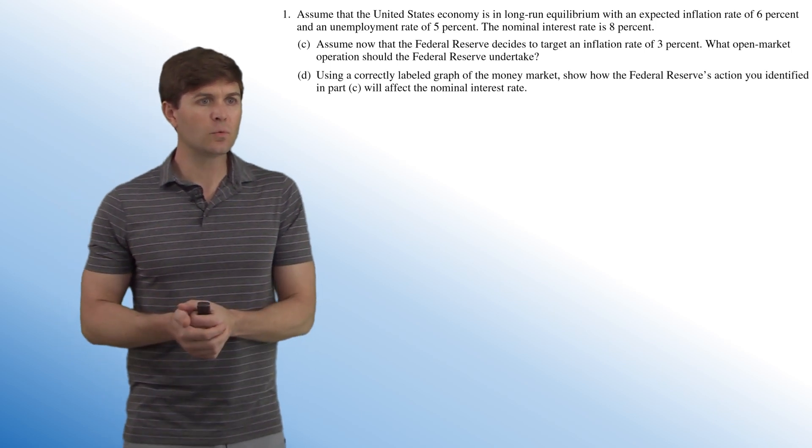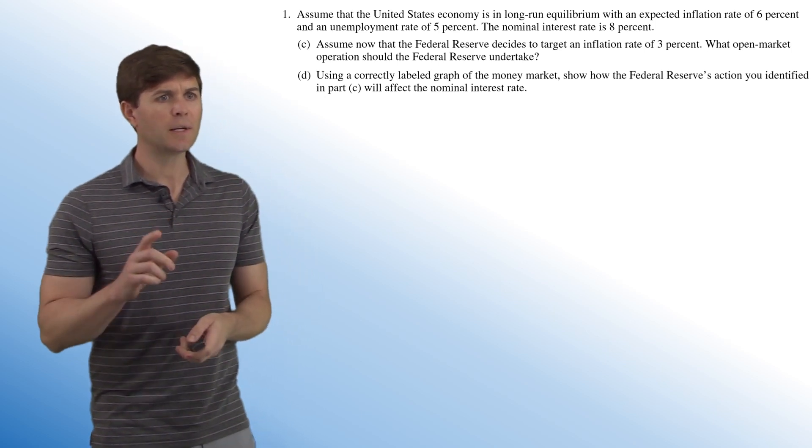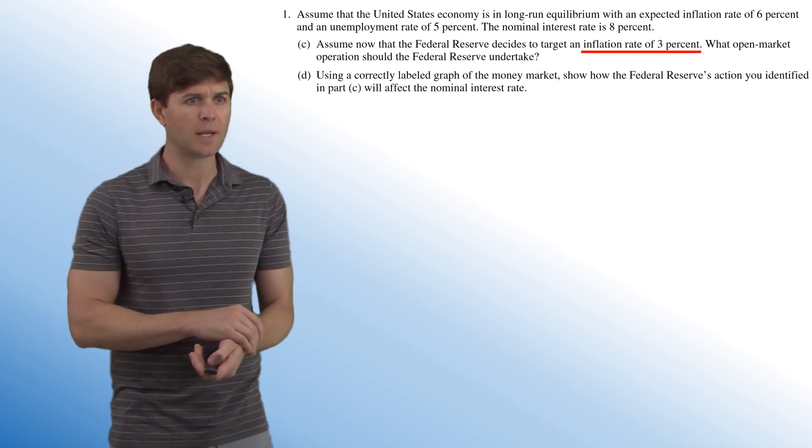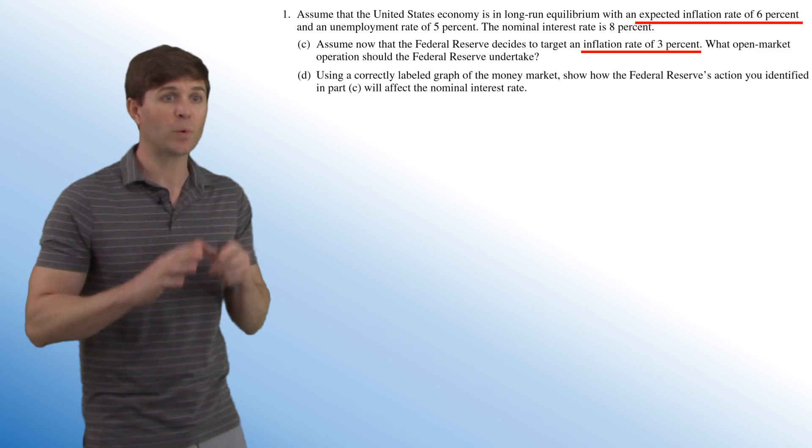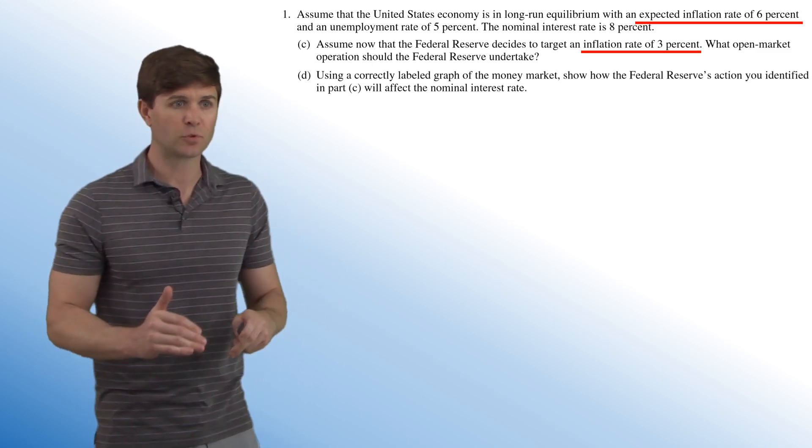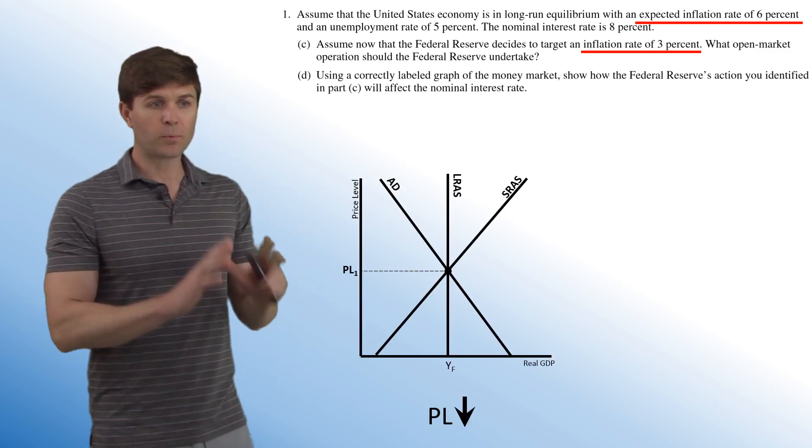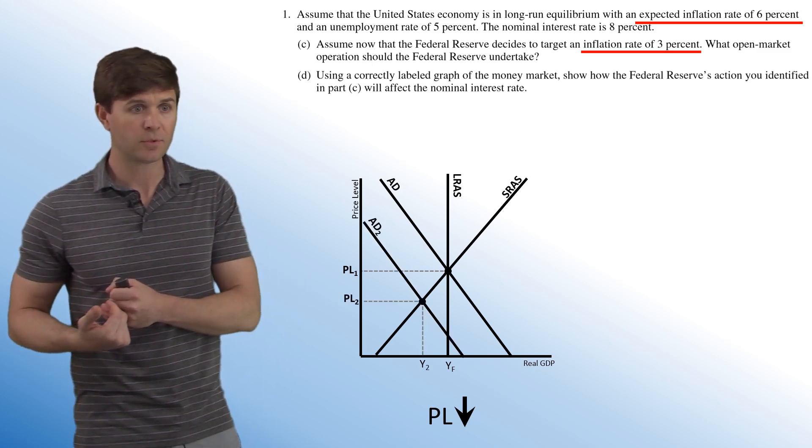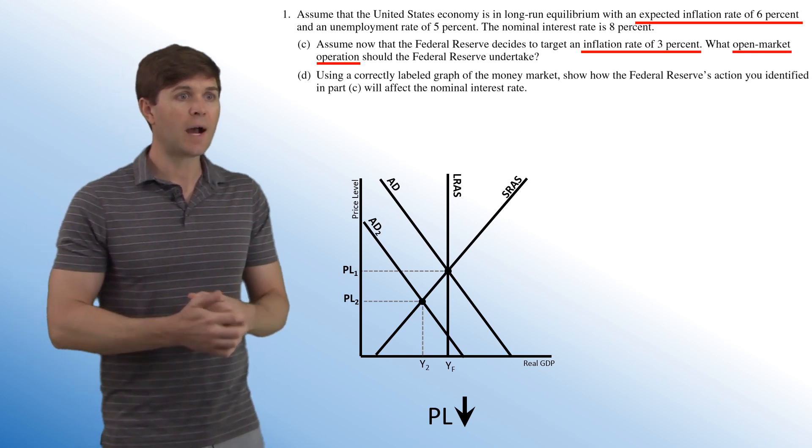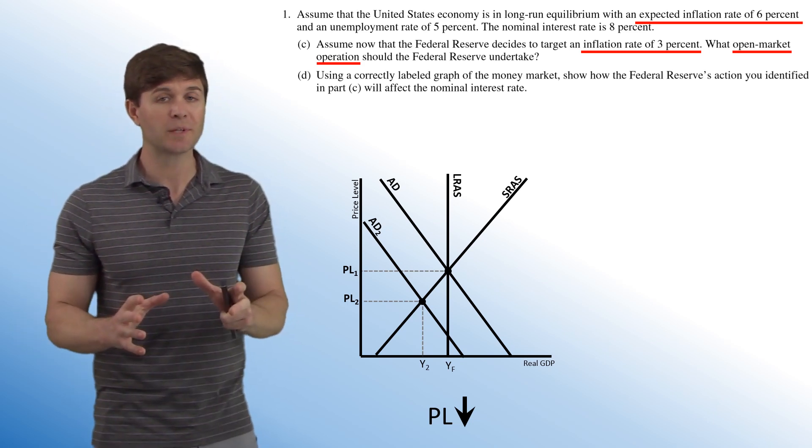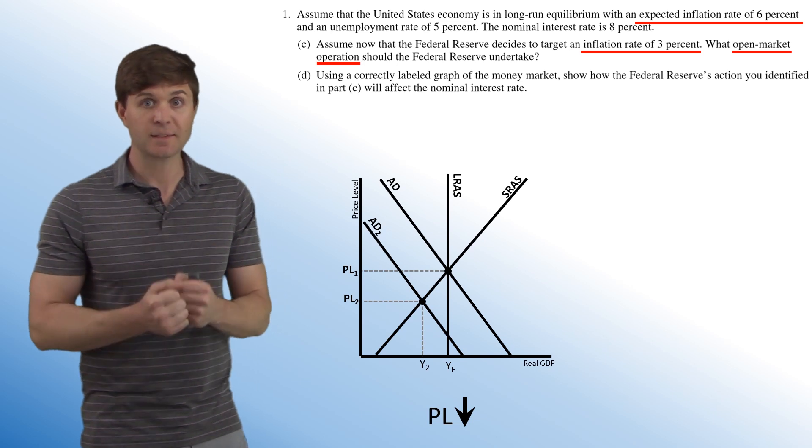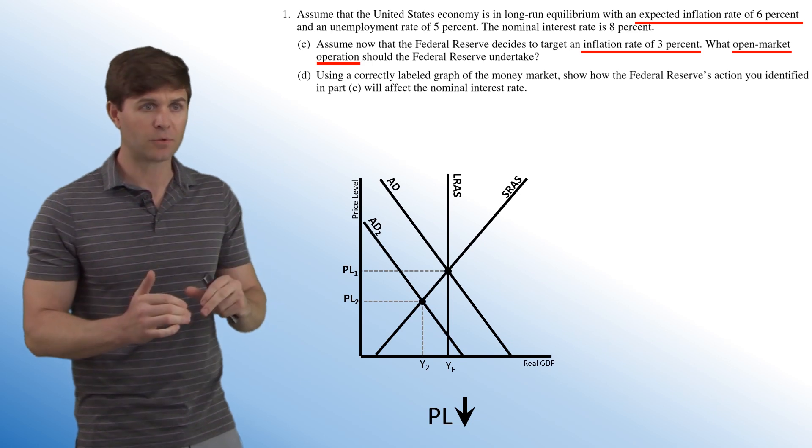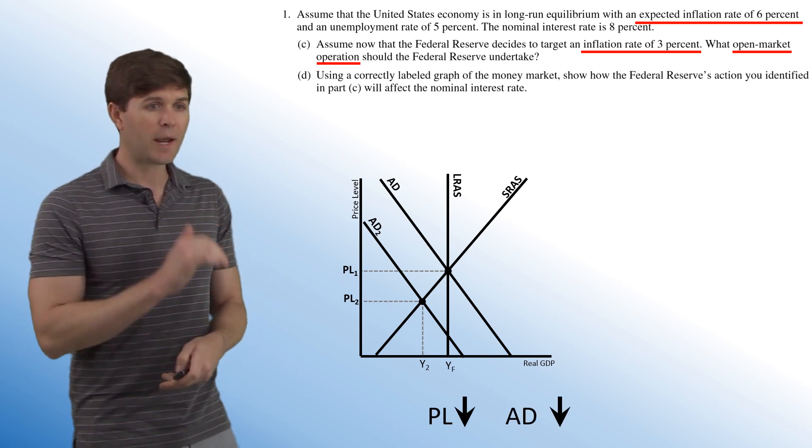Now part C, assume now that the Federal Reserve decides to target an inflation rate of 3%, what open market operation should the Federal Reserve undertake? So we want to get to 3%. We are at 6%. So we need price levels to go down. So we want price levels down. How do we get price levels down? We need to shift aggregate demand to the left. So aggregate demand needs to go down.